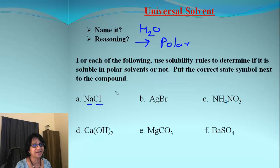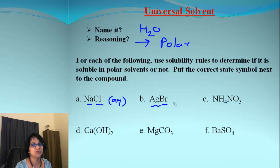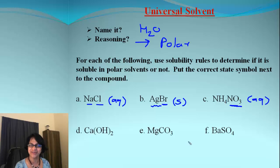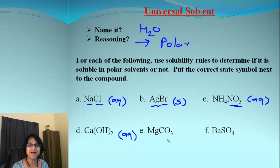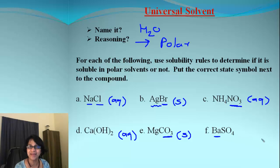Let's move on to predicting solubility for these compounds. Using our solubility chart: sodium chloride falls under aqueous. For bromide, silver comes as an exception, so that means it will be insoluble — a solid. All nitrates are soluble, so nitrate will be aqueous. For calcium hydroxide it will be aqueous.